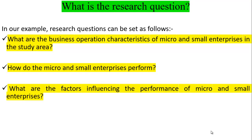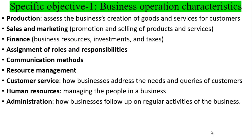For specific objective one, or research question one, it is about business operation characteristics. For example, you can study production characteristics — how micro and small enterprises create goods, how they produce goods, and how they deliver services to customers. You can take production as one of the business operation characteristics, prepare questions on it, and ask the owners of the micro and small enterprises.